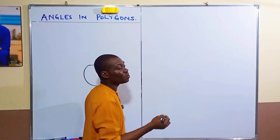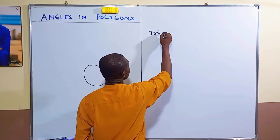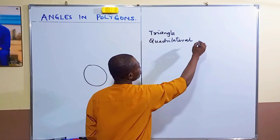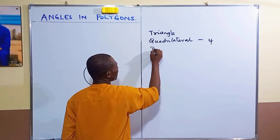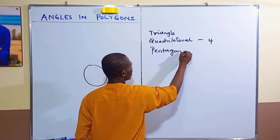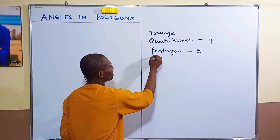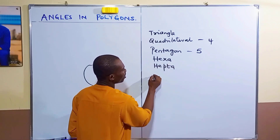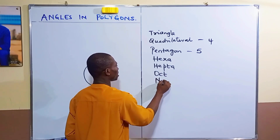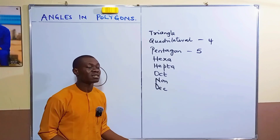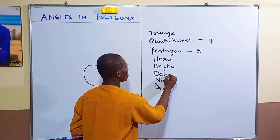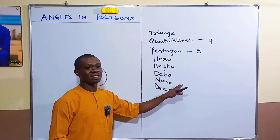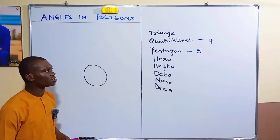The first polygon is a three-sided polygon, which is a triangle — which we have already looked at. Then you have the quadrilateral, which is four-sided; the pentagon, which is five-sided; the hexagon, the octagon, the nonagon, and the decagon. These are the six-, seven-, eight-, nine-, and ten-sided polygons.